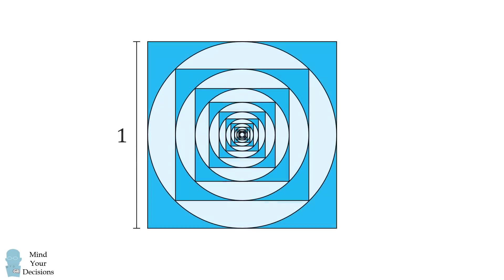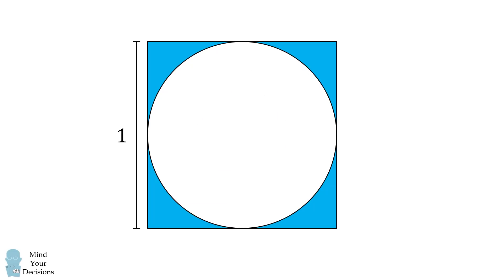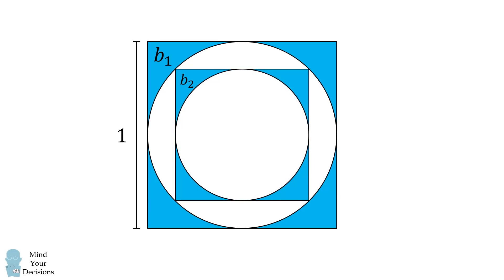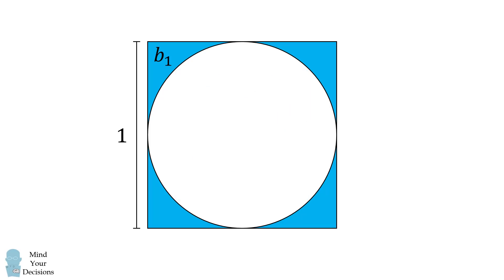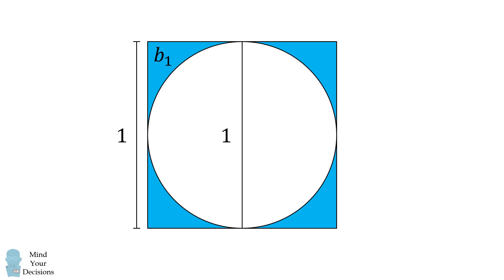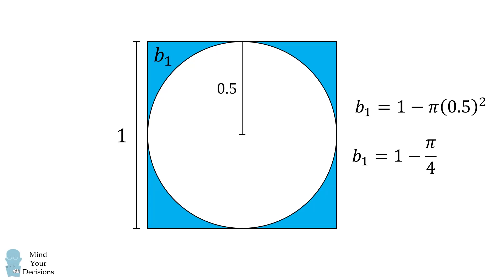So let's use this formula to solve the problem. Let's say the first blue area is b1, the second is b2, and so on. The side of the square is equal to 1, which means the diameter of the circle is equal to 1, and the radius is equal to 0.5. We calculate b1 as the area of the square minus the area of the circle: 1 squared minus π times 0.5 squared, which simplifies to 1 minus π over 4.